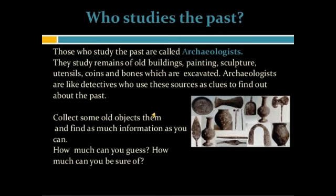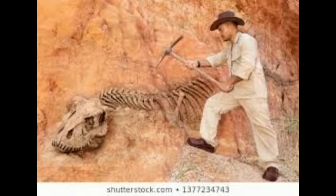Digging done by archaeologists helps us to know about the past, because at many places ancient remains are revealed by removing layers of soil over them one at a time. Cooking pots and raw seeds tell us what people ate.